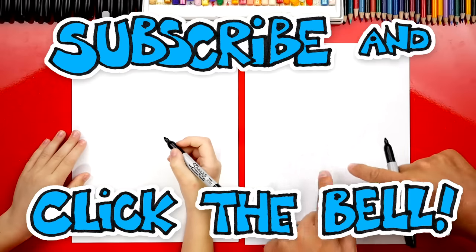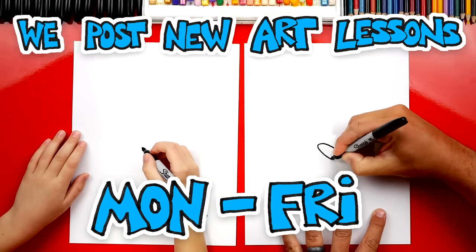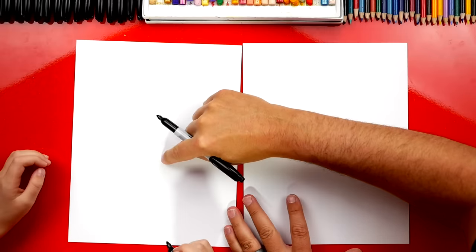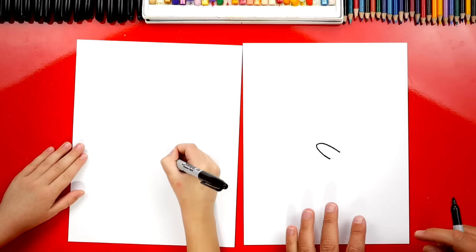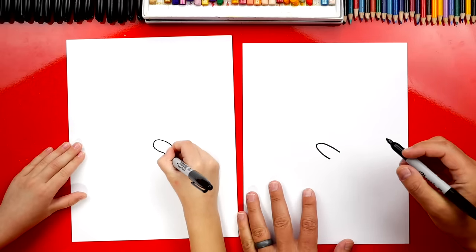We're first going to draw a sideways U. We're going to draw a U like this. And it's upside down. Sideways and upside down. So we'll start right here. Draw right about here. Good.